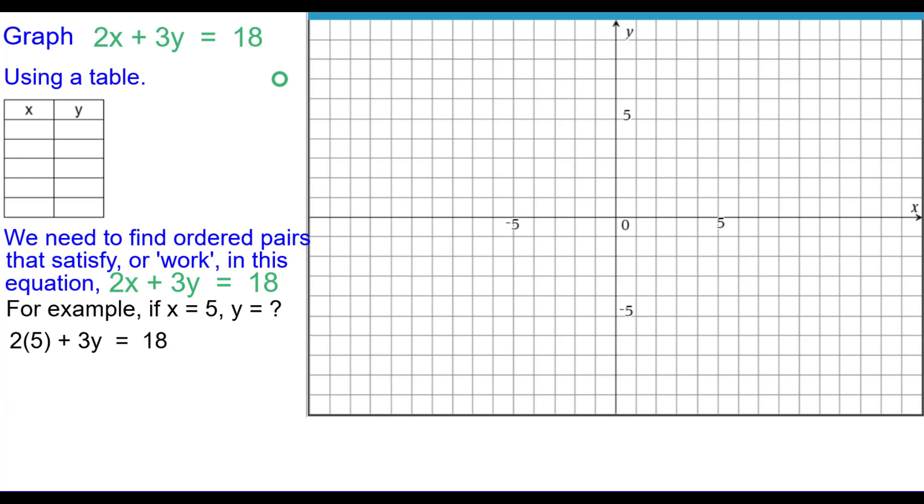So if X is equal to 5, we'll put 5 in place of X and then 2 times 5 is 10. We'll subtract 10 from each side and then divide each side by 3. Putting that ordered pair into the table. But we hope there's a better, faster way than this.